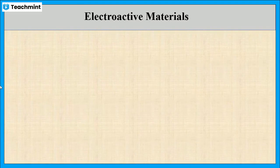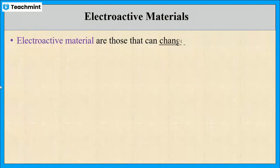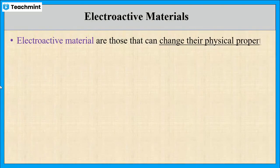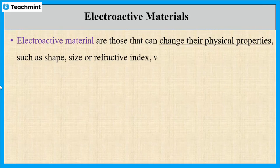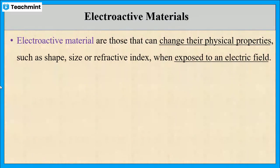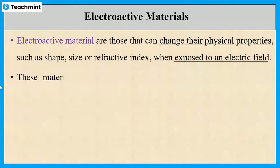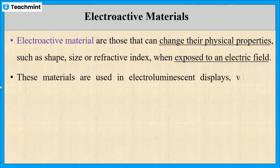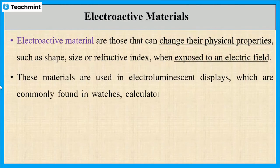One more type of materials are electroactive materials. These are the materials which change their physical properties like shape, size, or refractive index when exposed to an electric field. This type of materials are used in electroluminescent displays,